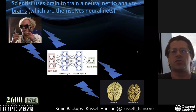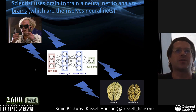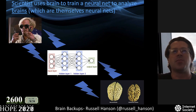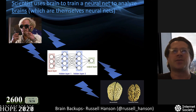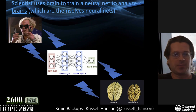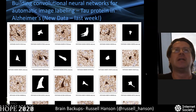Sometimes we joke in the lab that a scientist uses his or her brain to train a neural network to analyze brains, which are themselves neural networks. You have a scientist, you have an input layer, a hidden layer, an output layer, and you use that to analyze normal brains and Alzheimer's brains. There's no limit really to how many types of brains can be used to analyze other brains. We do this in the lab on Alzheimer's data.